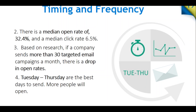Looking at median open rates across industries: the median open rate is 32.4% and the median click rate is 6.5%. If your results are below this, look into why. If you send more than 30 targeted emails there is a drop in open rates — there's a point at which you're sending too many. Think of it as the Goldilocks principle: there's a happy middle ground. It's best to keep an eye on these numbers and alter as you go. In general, Tuesday through Thursday are the best days to send.